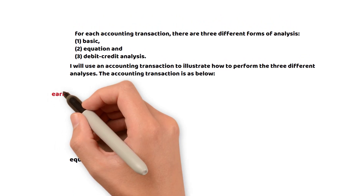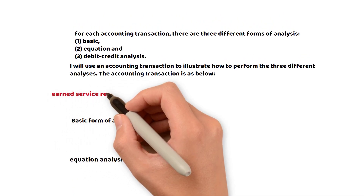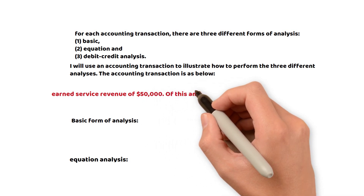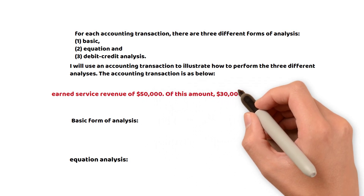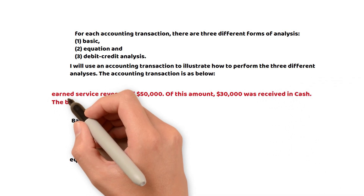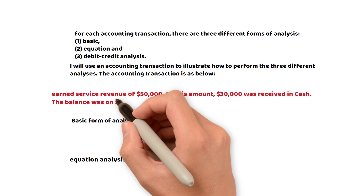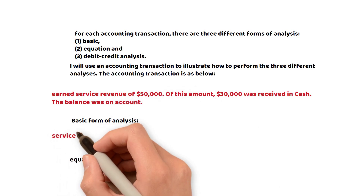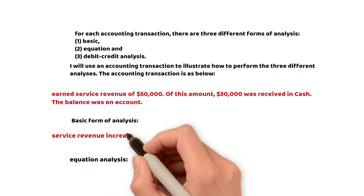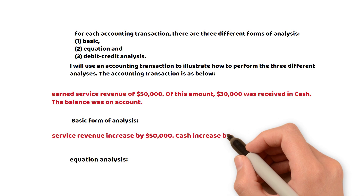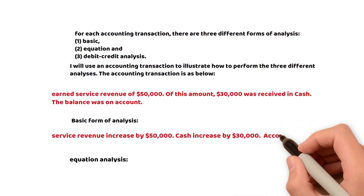Now let's use a different example: earned service revenue of fifty thousand dollars. Of this amount, thirty thousand dollars was received in cash; the remaining balance was on accounts receivable — twenty thousand. For the basic analysis: service revenue is increased by fifty thousand, cash is increased by thirty thousand, and accounts receivable is increased by twenty thousand.